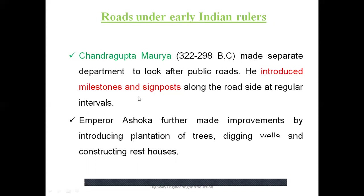Chandragupta Maurya introduced milestones and signposts along the roadside at regular intervals, as we see nowadays also adjacent to roads to guide us. Then the great emperor Ashoka further made improvements by introducing plantation of trees, digging wells and constructing rest houses.